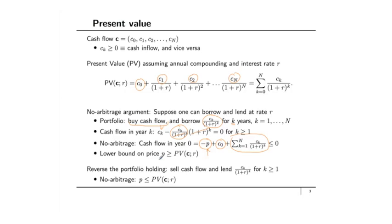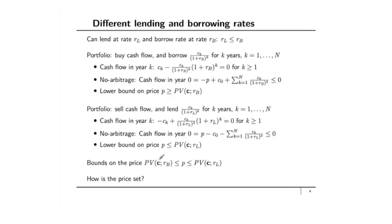Typically, the rate at which individuals borrow is higher than the rate at which they lend. If I deposit money at a bank — meaning I lend to the bank — the interest rate RL they give on deposits is less than the rate RB they charge on borrowings. So RB > RL. What happens to the value of a cash flow when borrowing and lending rates differ?